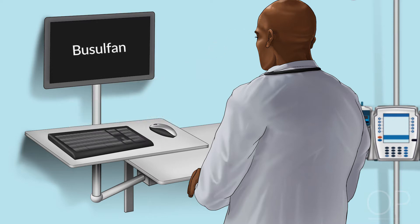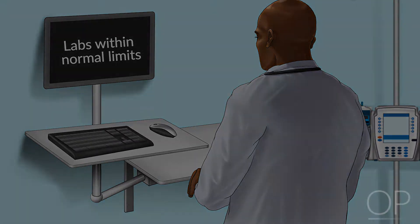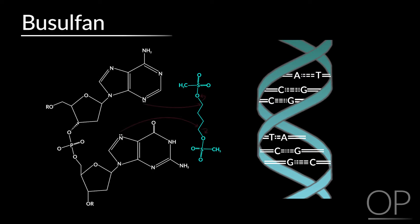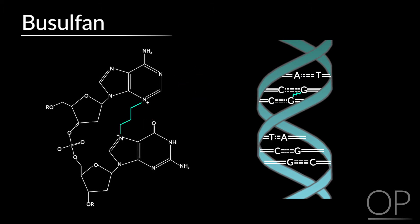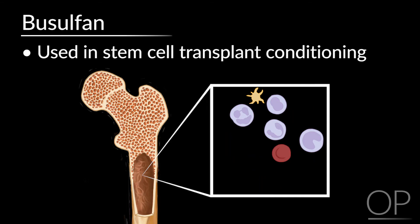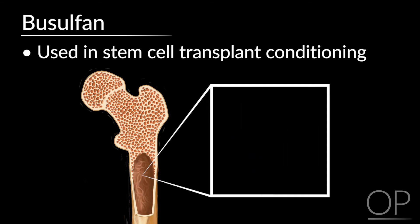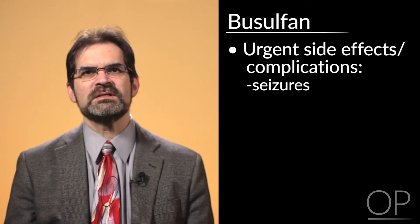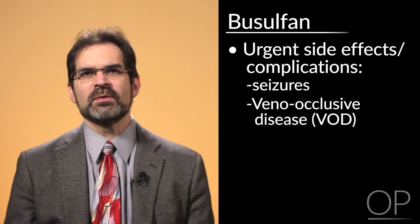You learn that the patient just started busulfan and has a recent set of labs that are within normal limits. Busulfan is an alkylating agent that forms interstrand DNA crosslinks between purine bases. It is used primarily in stem cell transplant conditioning. In myeloablative regimens, it destroys rapidly dividing cells and is used to destroy marrow cells. It is thought of as an alternative to radiation-based regimens. The urgent side effects and complications with busulfan include seizures and veno-occlusive disease.